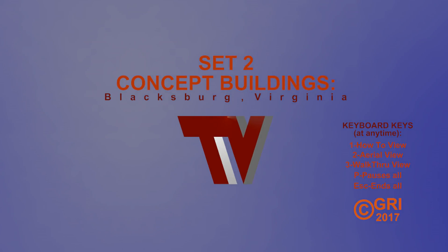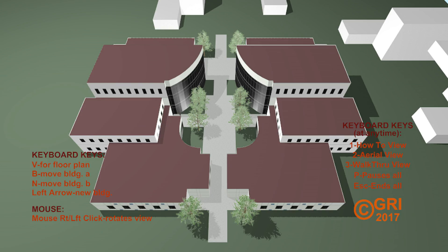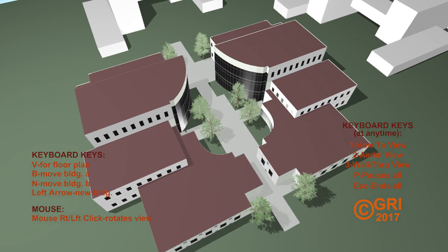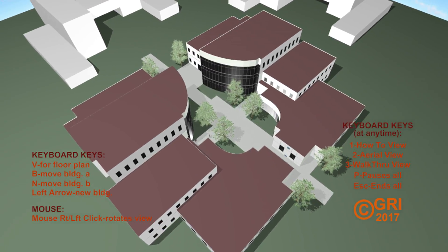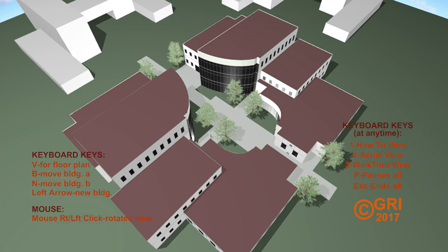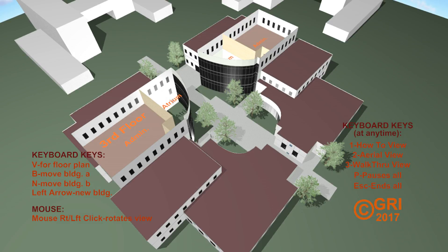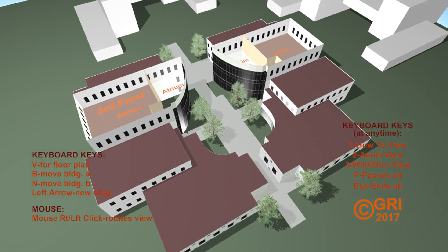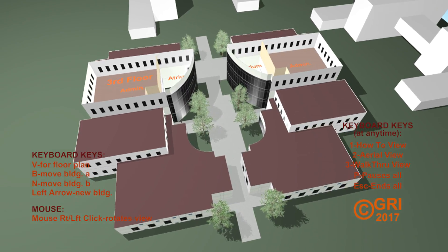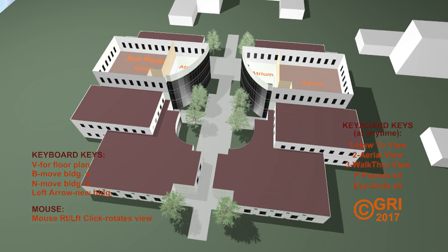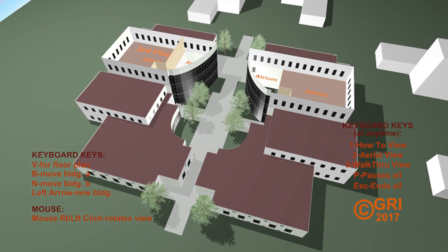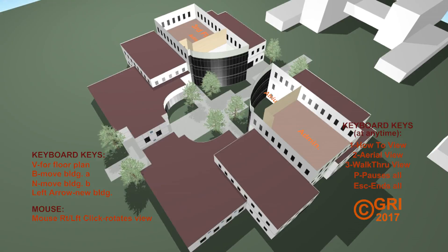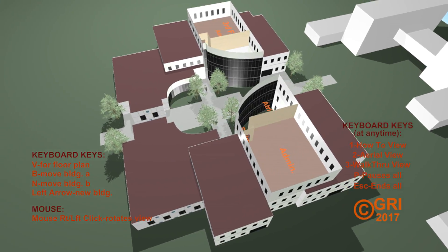Whereas this set two of the conceptual buildings will be an exterior walkthrough. I can put them both together and have interior and exterior — you can go in and out of buildings if you want. This is set up the same, with the same principles as the first one. I'm just calling out the third floor and showing an atrium with the administration on the third floor of this particular building.